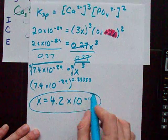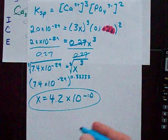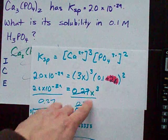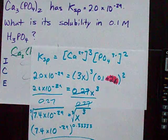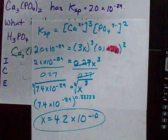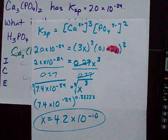And that is the solubility in moles per liter of calcium phosphate if you start with 0.1 moles per liter of phosphate in the solution originally. That's different than if we started with zero phosphate originally.